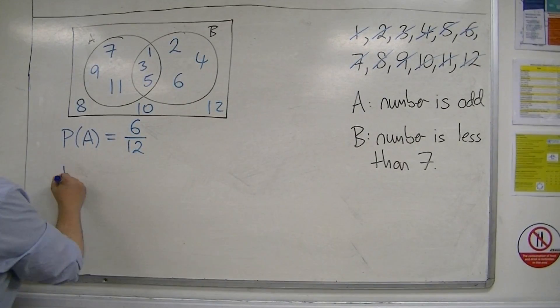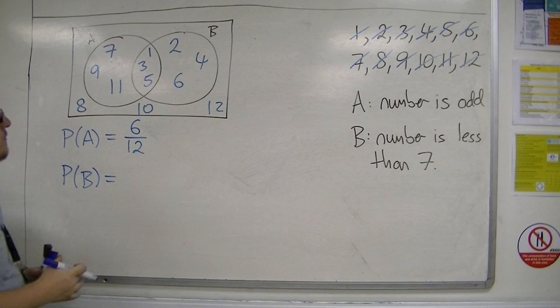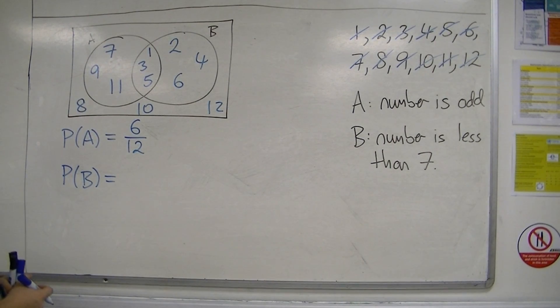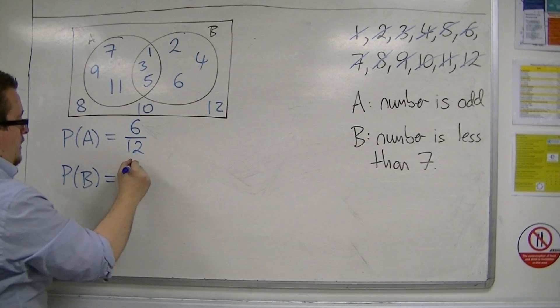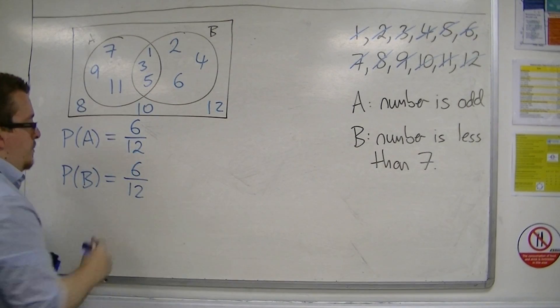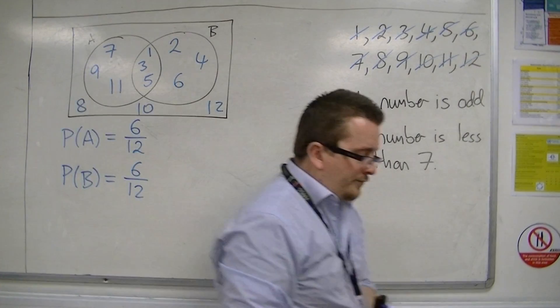The probability of B. Well, number less than 7, so we've got 1, 2, 3, 4, 5, 6. So, once again, 6 out of 12, 1 half.